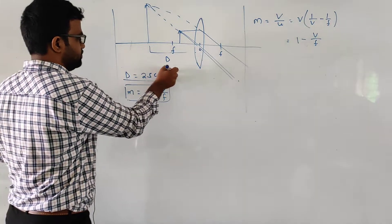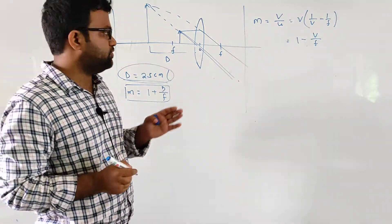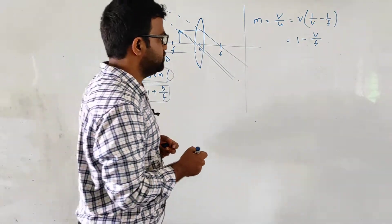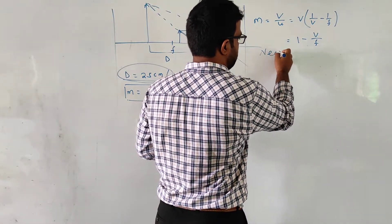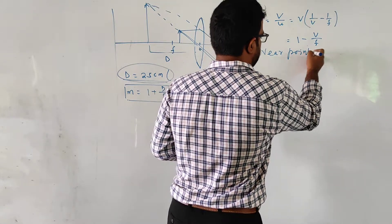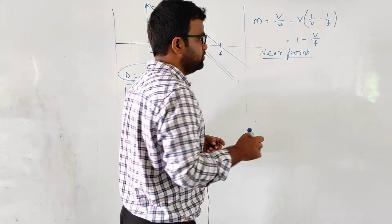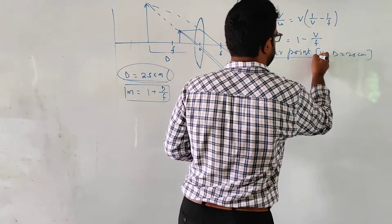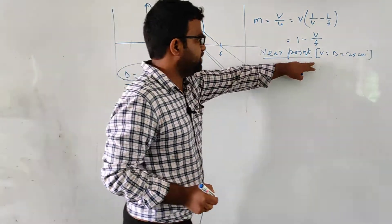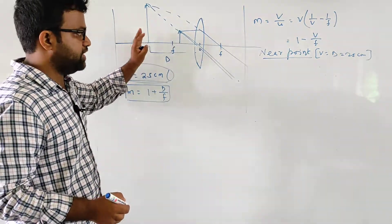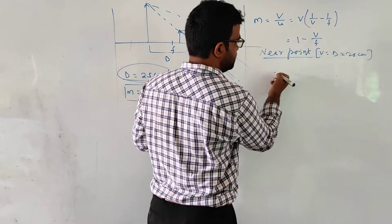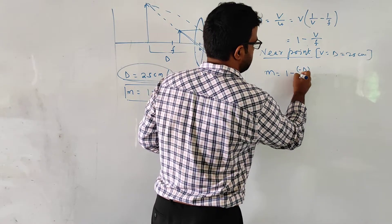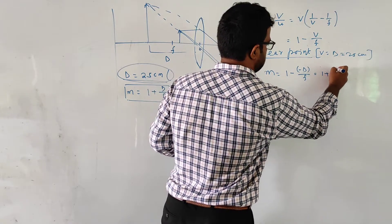When the image is produced at d, that is 25 centimeters — the near point — v equals d. But since we are getting a virtual image on the left side, according to sign convention v equals minus d. So the magnification becomes one minus (minus d) by f, which gives one plus d by f.